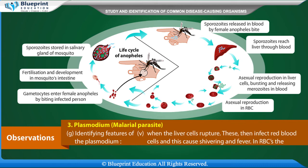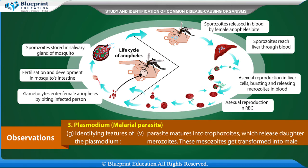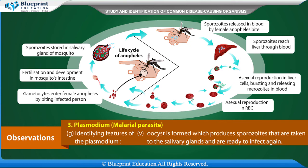The sporozoites divide by fission in liver cells to produce merozoites, which are released into the blood when liver cells rupture. These merozoites infect red blood cells, causing shivering and fever. Inside RBCs, the parasite matures into trophozoites, which release daughter merozoites. These merozoites get transformed into male and female gametocytes.